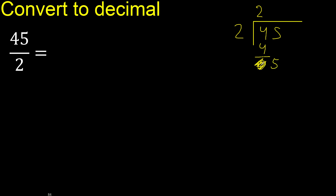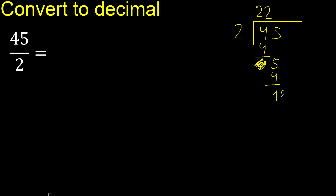Bring down the 5. 2 multiplied by 3 is 6 — too big. 2 multiplied by 2 is 4. 5 minus 4 is 1. That is not a whole number, so complete the division.